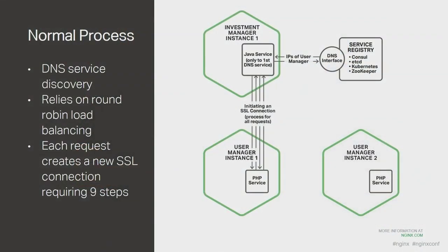Let's start by looking at a normal process for how services connect and distribute their requests. In this diagram, the investment manager needs to talk to the user manager to get information. The investment manager will create an HTTP client, that client will do a DNS request against the service registry and get back an IP address, it will then initiate an SSL connection to the user manager going through that nine-step process, and once the data is transferred, the VM will close the connection and garbage collect that HTTP client.